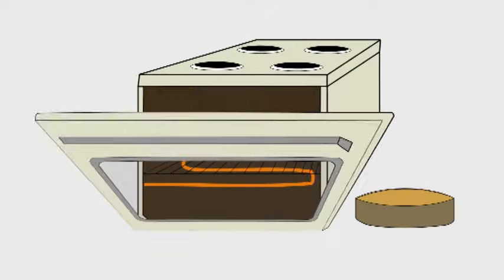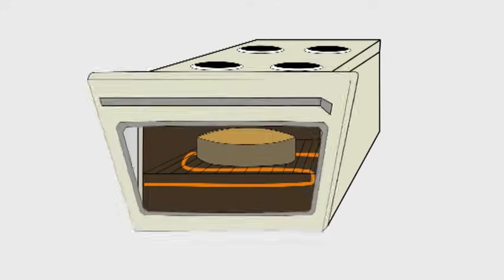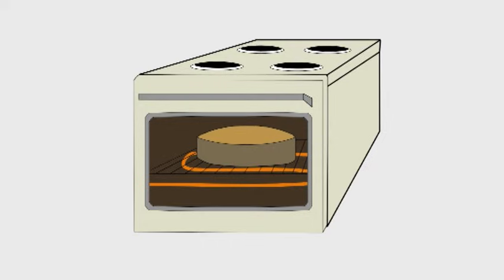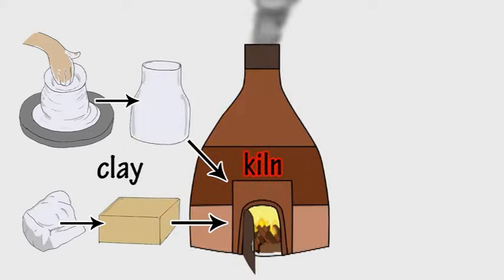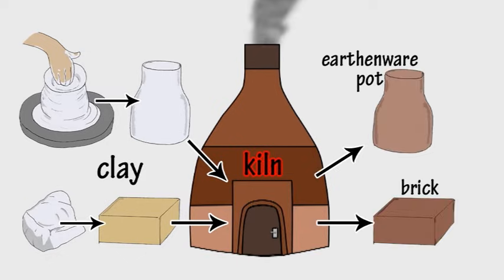Other materials undergo different sorts of changes when they are heated up. For example, cake mixture rises and turns into solid cake when it is baked in a hot oven. Clay can be shaped and turned into hard bricks and earthenware when it is baked in a very hot kiln.